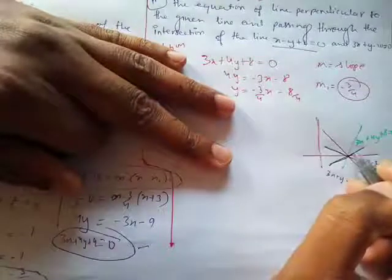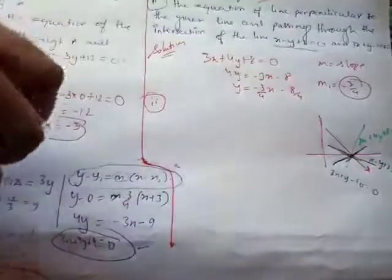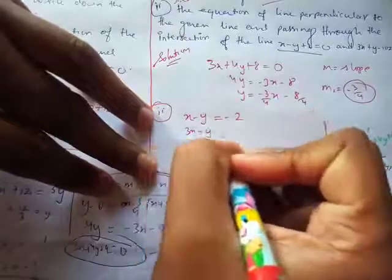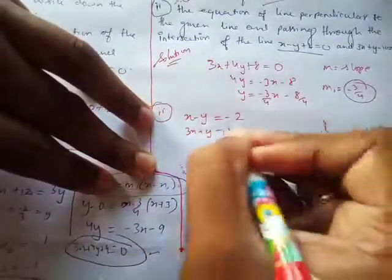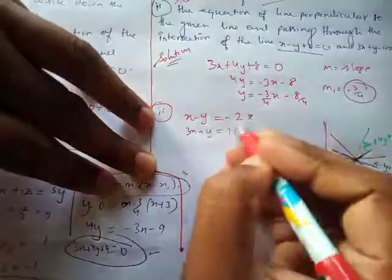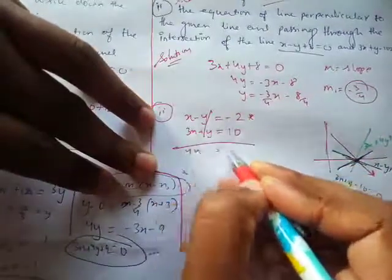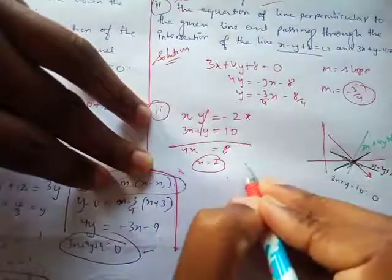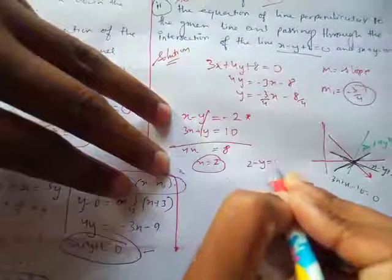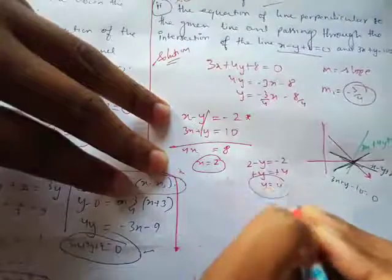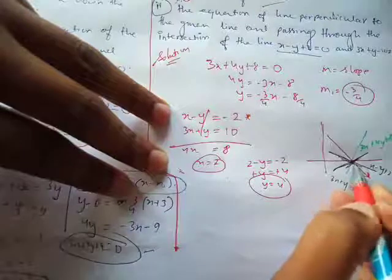To find the intersection point of the two black lines, I'll solve simultaneously: x - y = -2 and 3x + y = 10. Adding both equations gives 4x = 8, so x = 2. Substituting x = 2 into x - y = -2: 2 - y = -2, so y = 4. The intersection point is (2, 4).